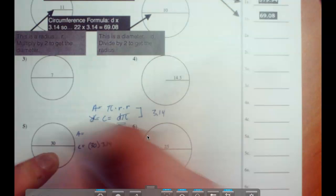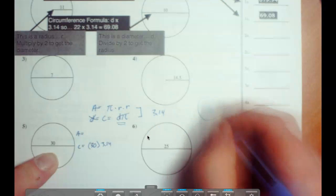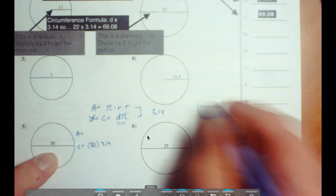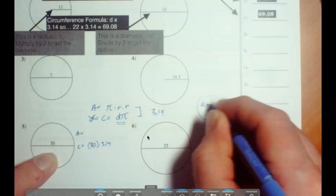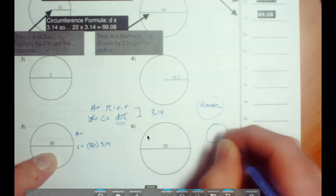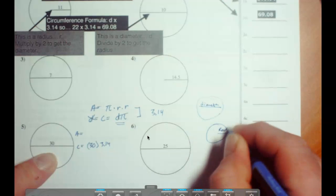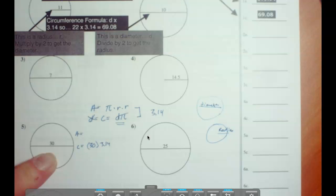And up here, it's going to tell you that the long line in the circle is the diameter, and the short line in the circle is the radius. It's easy to remember because diameter is a longer word than radius.